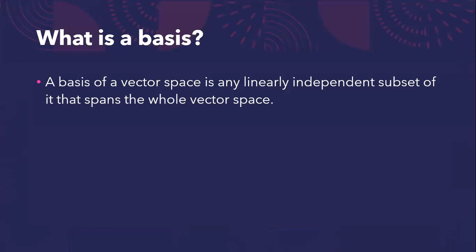A basis of a vector space is any linearly independent subset of it that spans the whole vector space. In other words, each vector in the vector space can be written exactly in one way as a linear combination of the basis vectors.